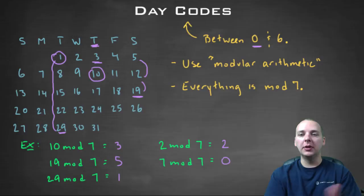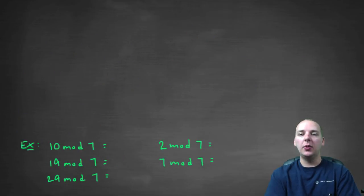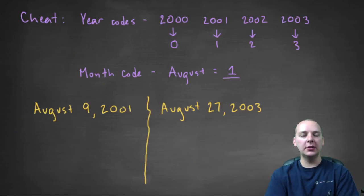Alright, so let's practice a little bit, let's see how we do. Now, I know we haven't talked about year codes yet, so we're going to cheat a little bit. I'm going to give you just a few, just to get us started. Purple is cheating a little bit. The year codes for two thousand is zero, two thousand one is one, two thousand two is two, two thousand three is three.